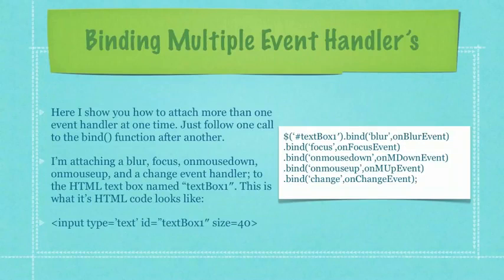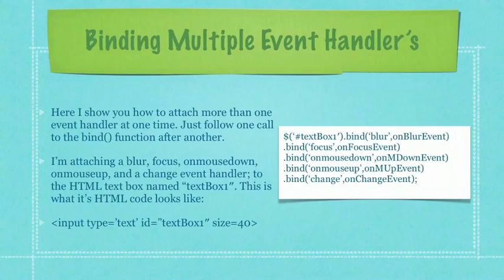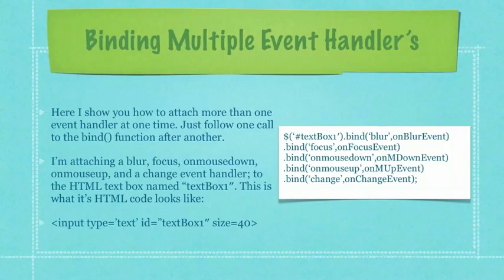Here I show you how to attach more than one event handler at one time. Just follow one call to the bind function after another, as you see here on the right side of your screen. I'm attaching a blur, focus, onMouseDown, onMouseUp, and a change event handler to the HTML text box named textBox1. And you can see the code that goes along with that text box in the third bolded item on the left side of your screen.